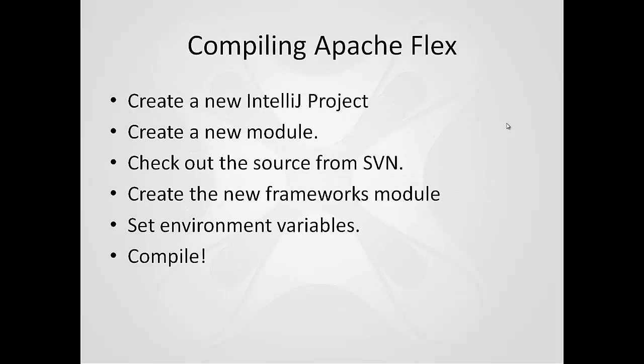The basic way we're going to be working with this: we're first going to create a new IntelliJ project. We're going to create a new module which is going to house our frameworks directory — that's really an optional step. However, that will allow you to work with ActionScript and it actually knows how to read ActionScript. You're going to check out the source from SVN, create the new frameworks module, set a couple environment variables that point to those optional applications, and then we're going to compile.